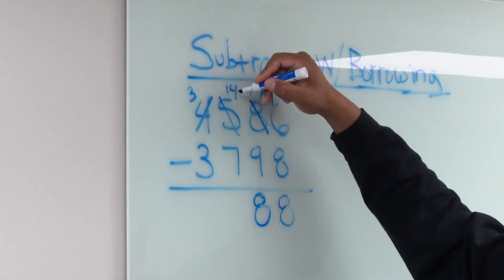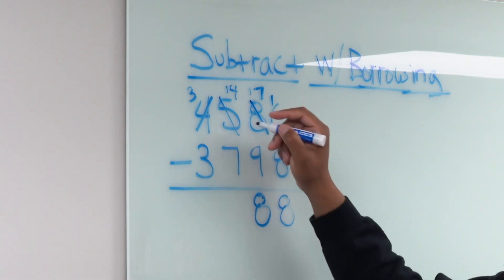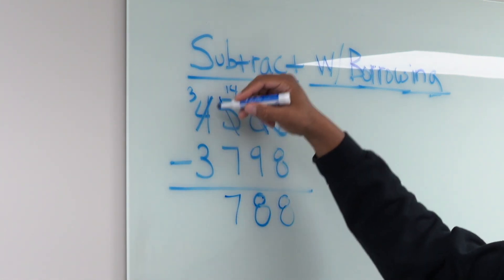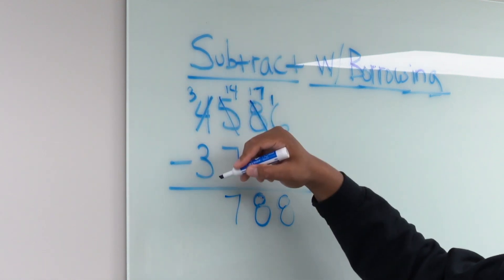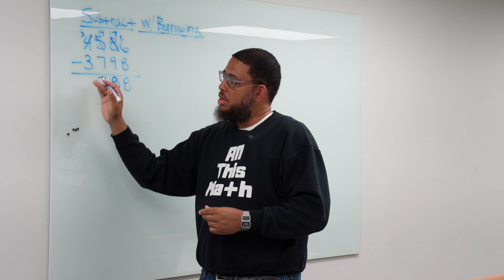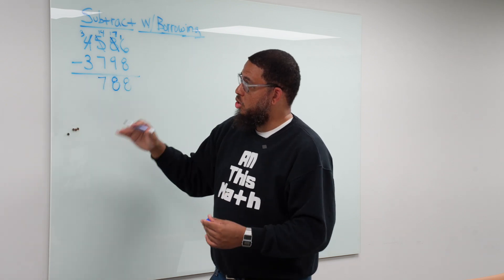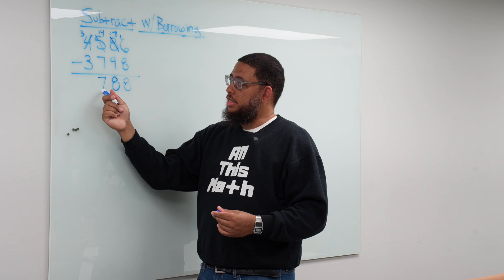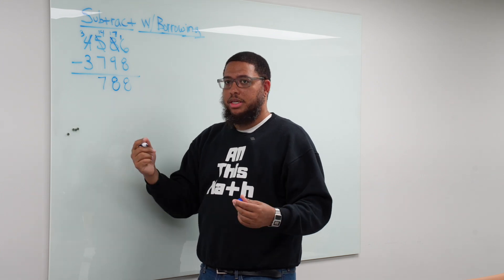So then we put those 10 hundreds with these 4 hundreds and now we have 14 hundreds. So now we're saying we got 14 hundreds and we're taking away 7 hundreds which is going to leave us with 700. Then we go to the thousands place and we have 3,000s minus 3,000s which would be 0. And because that's in the largest place, we don't need to write it. So our final answer or our difference, because our answer when we subtract numbers is called a difference, is 788. And that's today's lesson.